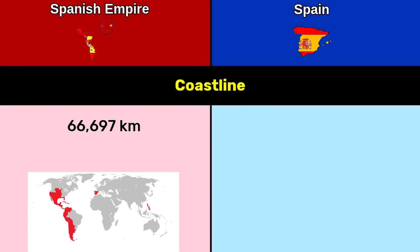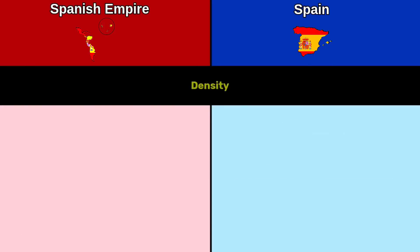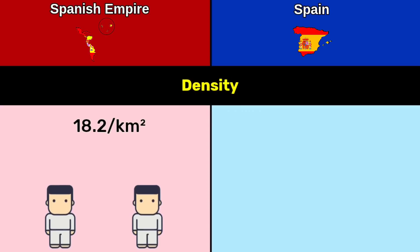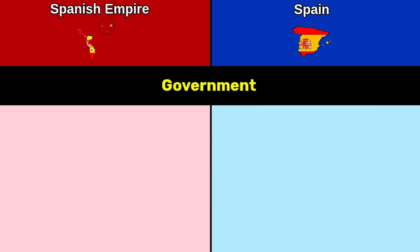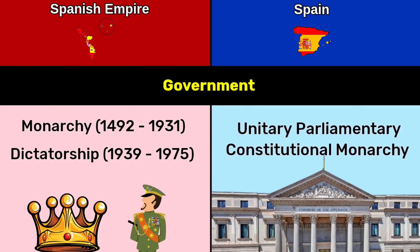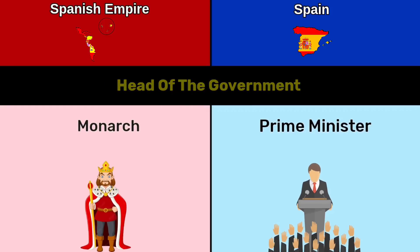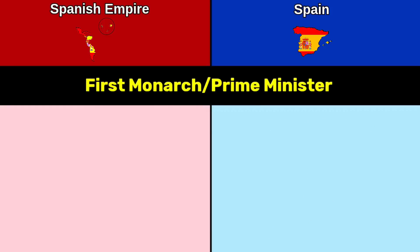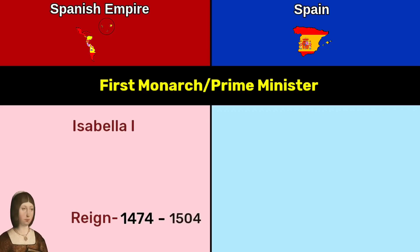Coastline: Spanish Empire 66,697 kilometers; Spain 4,964 kilometers. Density: Spanish Empire 18.2 per square kilometer; Spain 94 per square kilometer. Government: Spanish Empire — monarchy and dictatorship; Spain — unitary parliamentary constitutional monarchy. Head of government: Spanish Empire — monarch; Spain — prime minister.